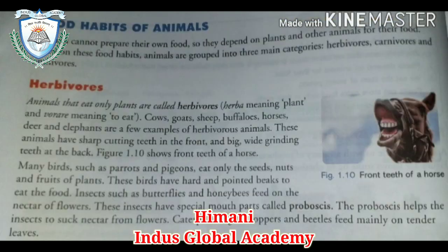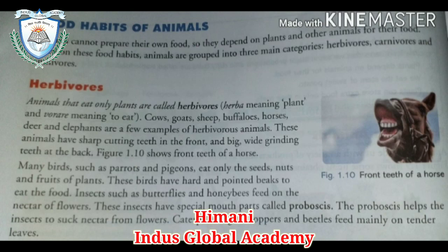On the basis of food habits, there are three categories: herbivores, carnivores, and omnivores. Herbivores are those animals that eat only plants. Examples: cow, goat, sheep, buffalo, and elephants. These are a few examples of herbivore animals.